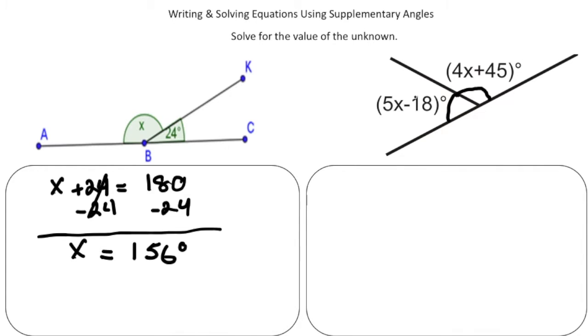Again, the sum of these two angles is going to equal 180 degrees. So we have 5x - 18 + 4x + 45 = 180 degrees.